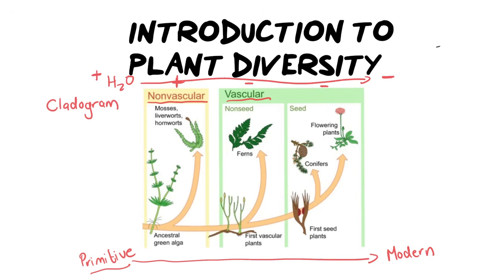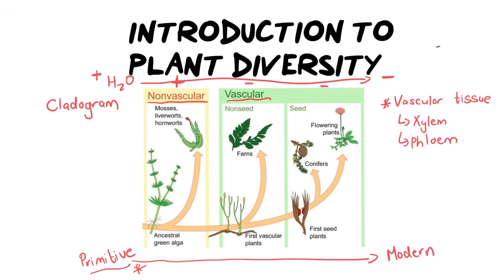Another way we classify plants is whether or not they have vascular tissue. Vascular tissue — if you've forgotten from grade 10 — is when we talk about xylem and phloem. Those are the tissues that transport food and water. Very early, primitive plants didn't have any vascular tissue. As we progress over time, we got more and more vascular tissue and it became more specialized.